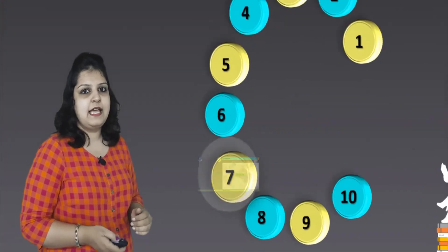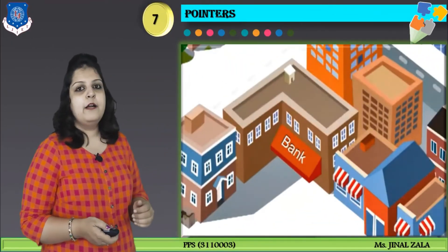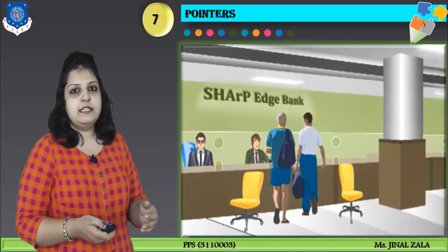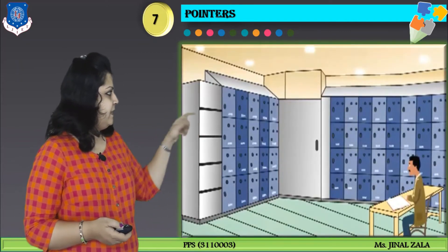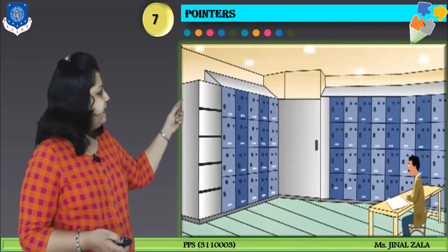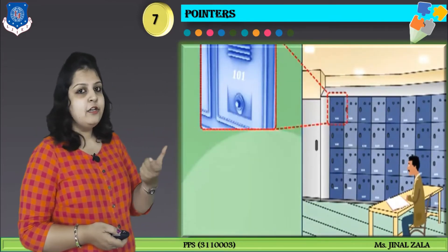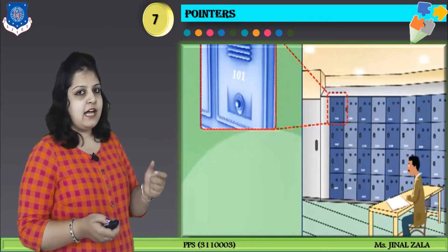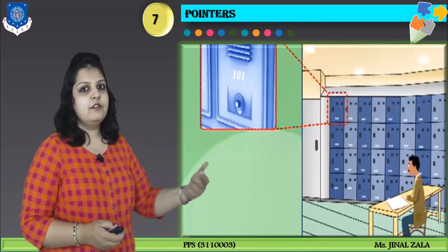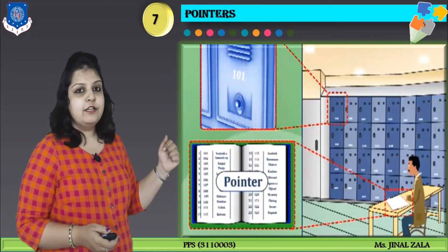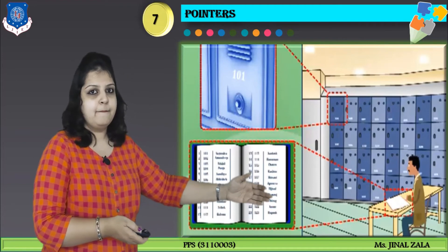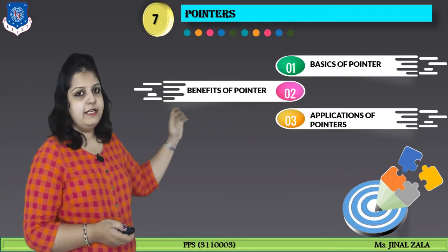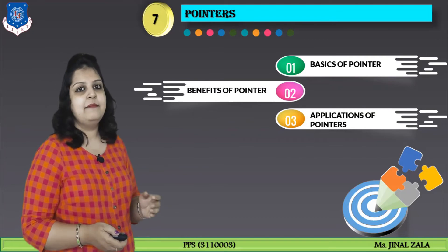Our next module, module number 7, is pointer. What is a pointer? A pointer is mainly used to store the address of another variable. To understand this with a day-to-day life example — this is a bank with a locker system. You can see different lockers, and each locker has a particular unique number or unique address. All these locker numbers are stored in one register with different owners' names, and this register is called a pointer. The same scenario happens in C programming with the concept of pointer. In this chapter, we will discuss basics of pointer, benefits, applications, and many more topics.